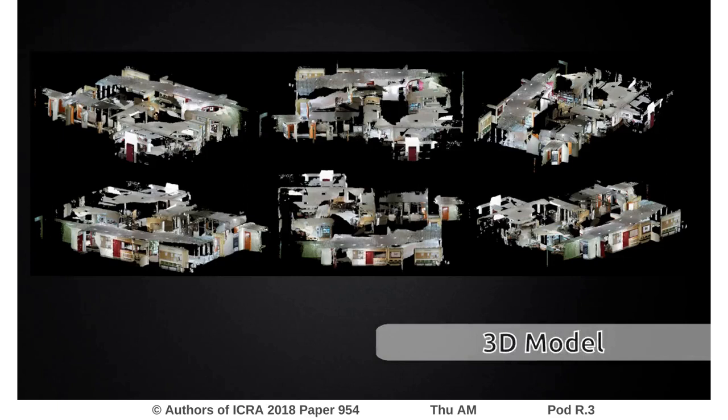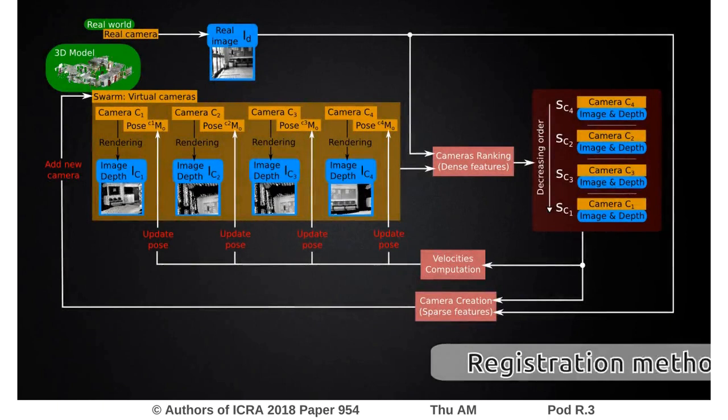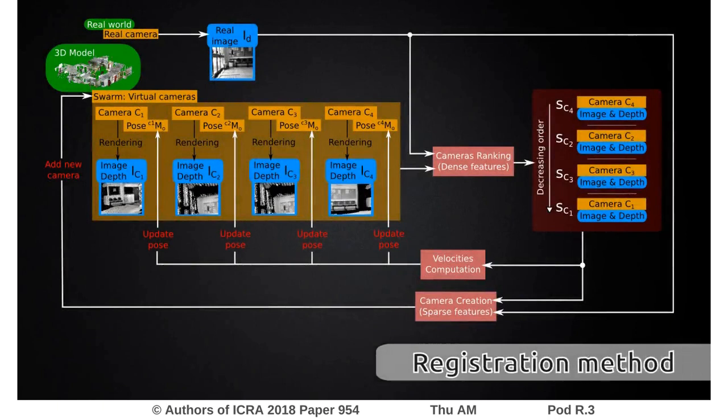The camera data in this model represent our ground truth to qualitatively and quantitatively evaluate our registration method. The 2D-to-3D registration has been designed in the form of a particle swarm optimization. Each particle of the swarm is a virtual camera that moves inside the 3D model trying to reach a desired pose represented by the real image given in input.